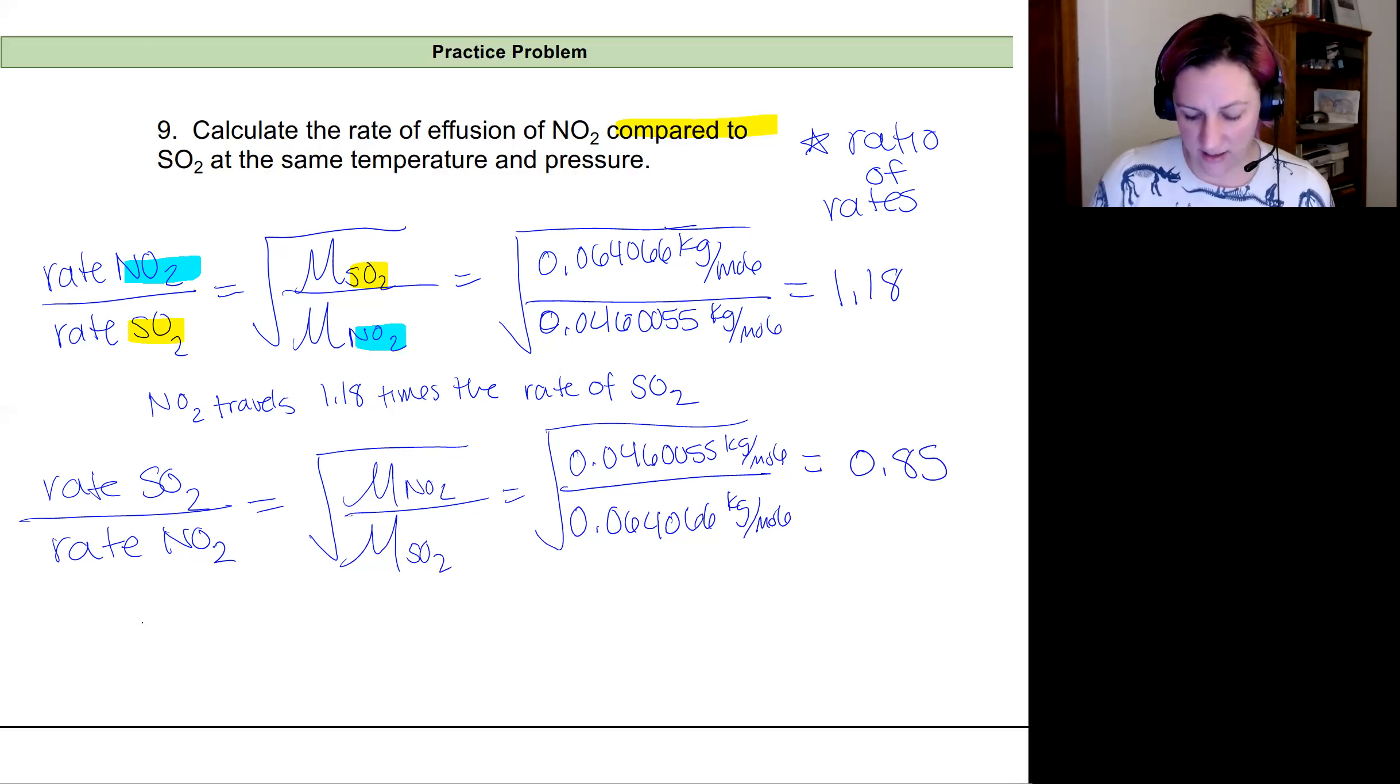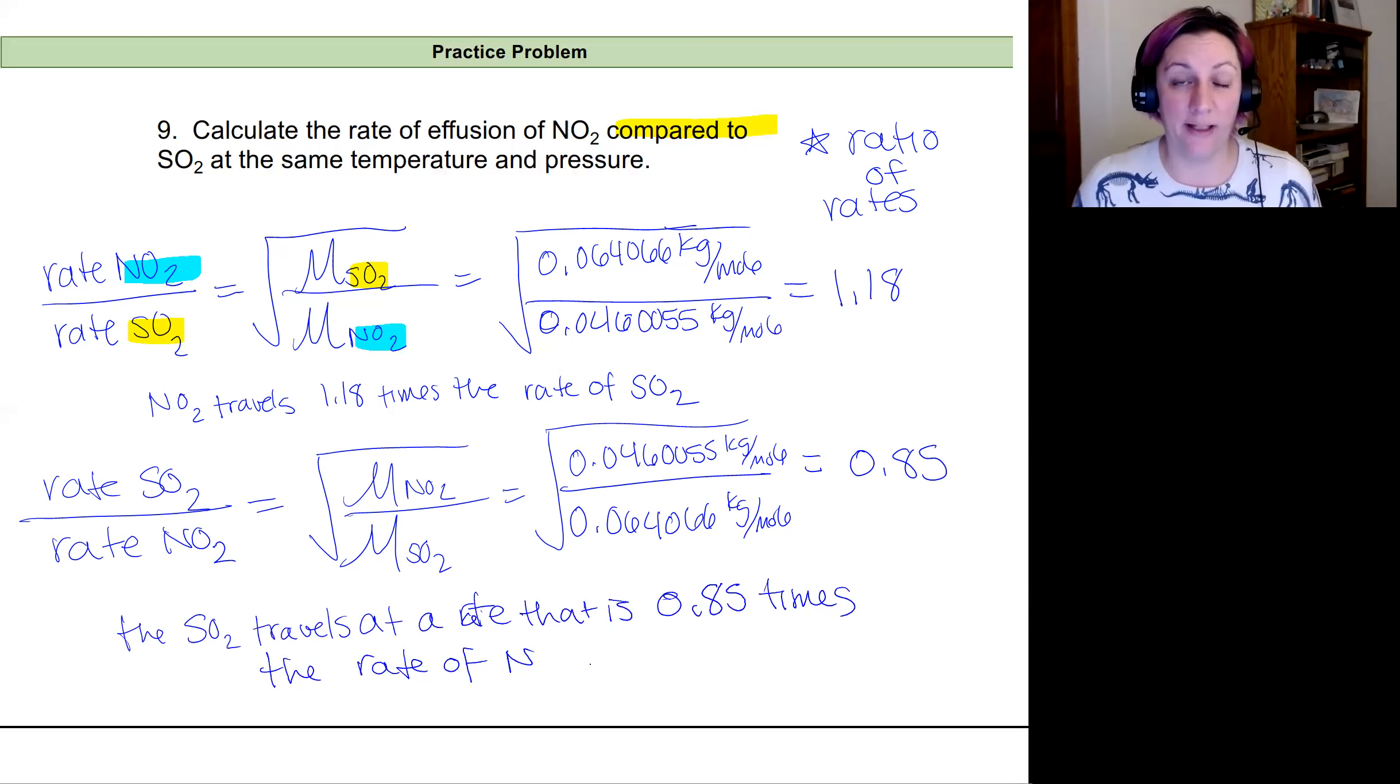So what that means is the SO2 travels at a rate that is 0.85 times the rate of NO2. And either of those would be fine.